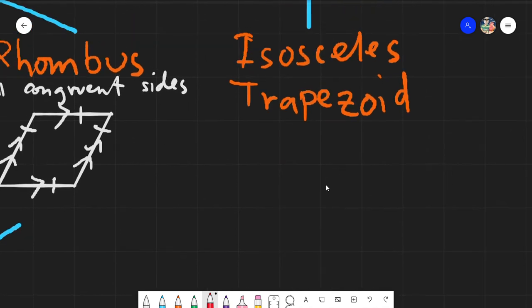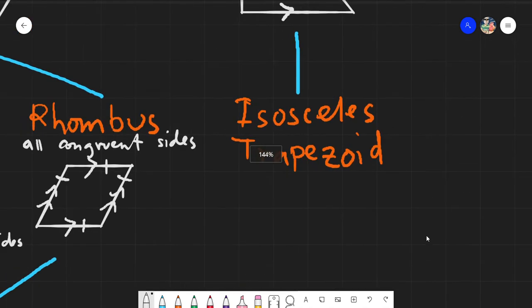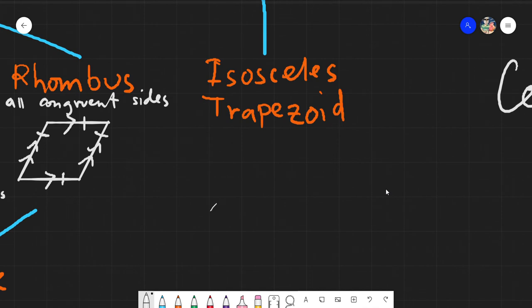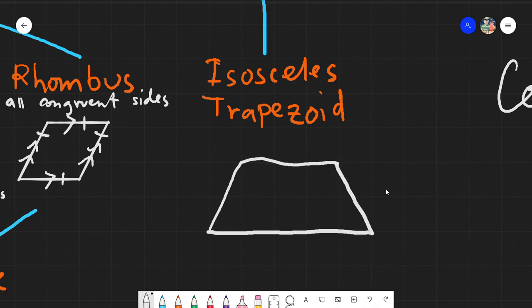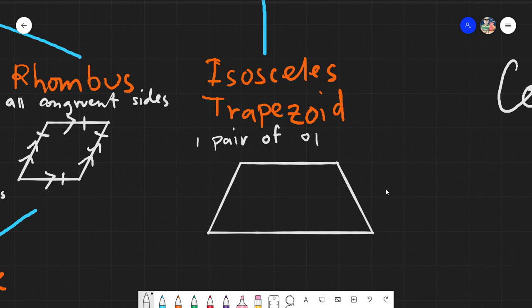And lastly, we have our isosceles trapezoid. For the isosceles trapezoid, I failed to draw it, but I will draw it right now. We have this isosceles trapezoid. As for the isosceles trapezoid, the special property of this one would be it would have one pair of opposite congruent sides. Ano yung opposite congruent? Obviously, ito yan. Ito yung ating congruent side.